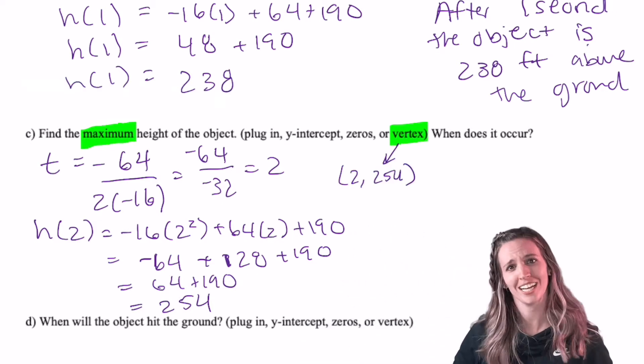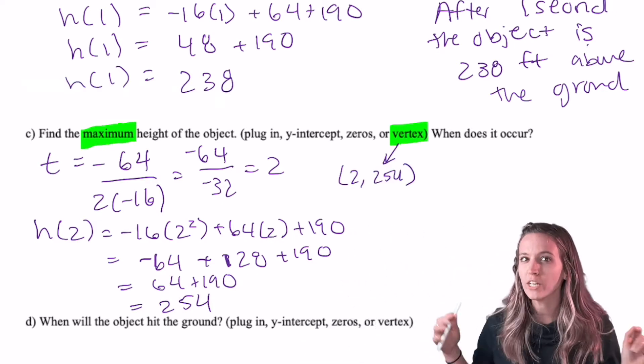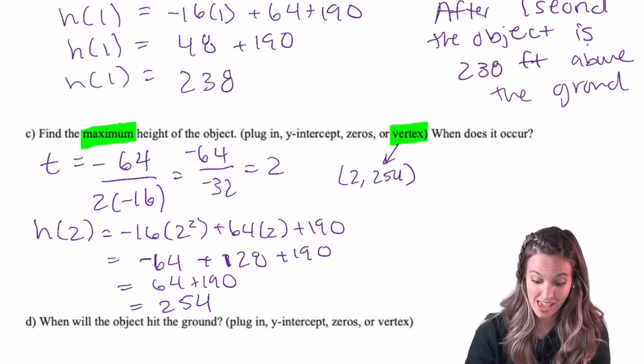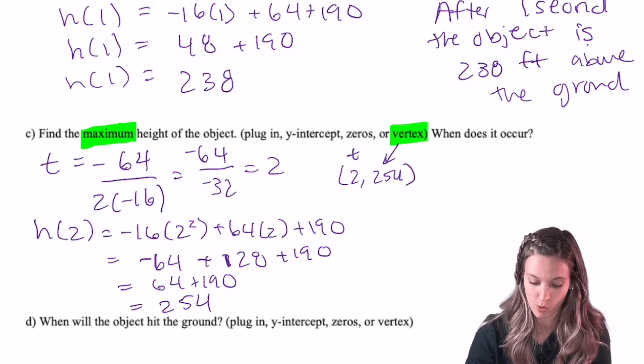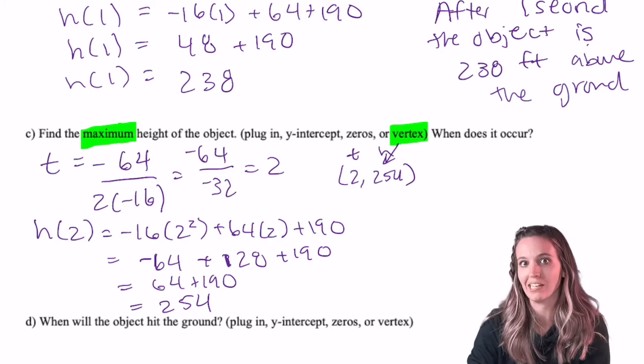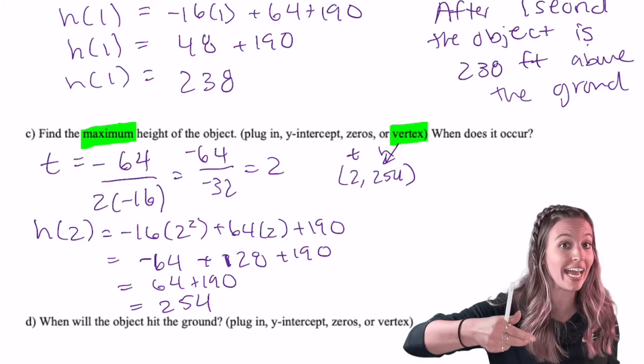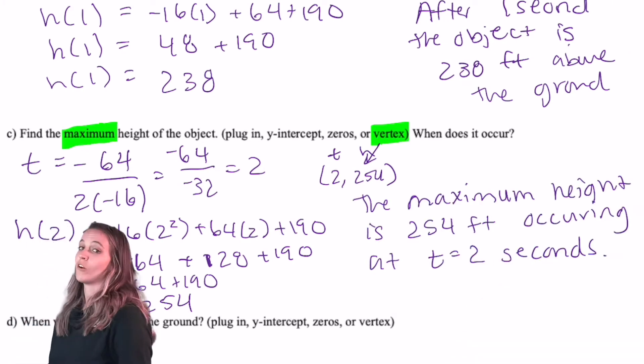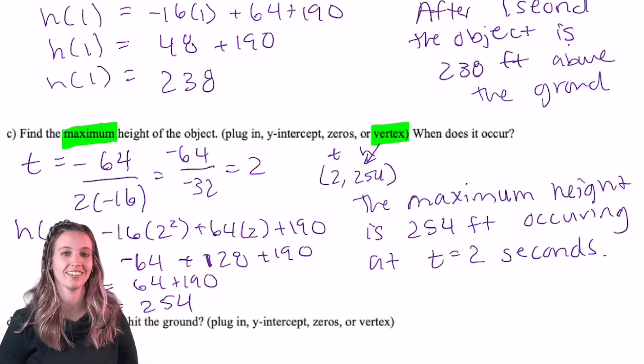So if I get a vertex of 2, 254, which one's the maximum value and which one's the time? T, the input, that's going to be my time value, and then the output, that's my height. So I'm going to give my maximum height at t equals 2 seconds. So maximum height of the object is 254 feet occurring at t equals 2 seconds.